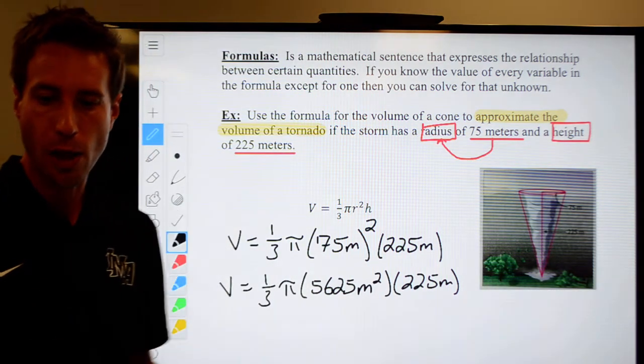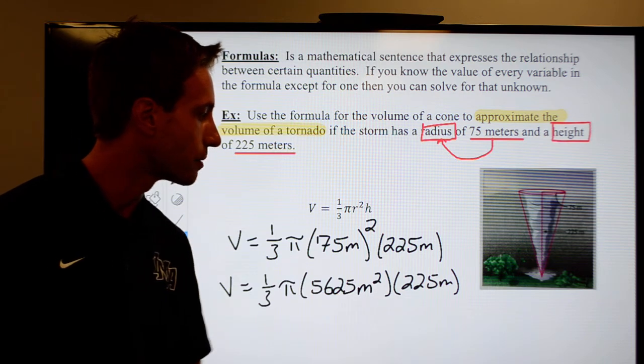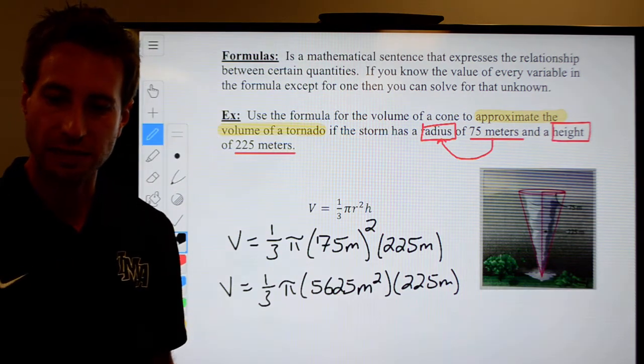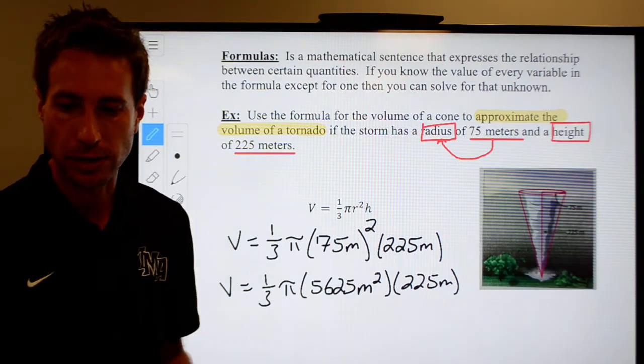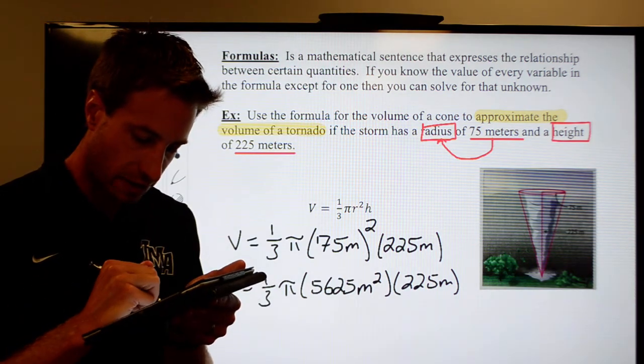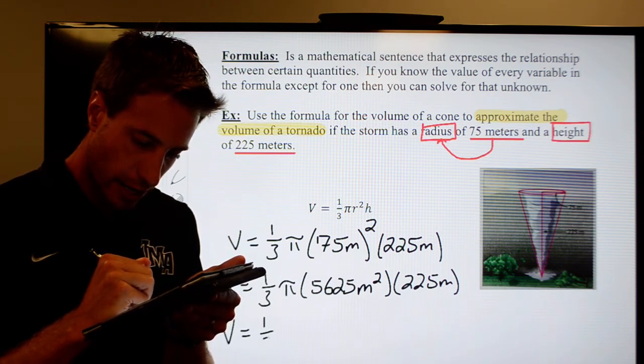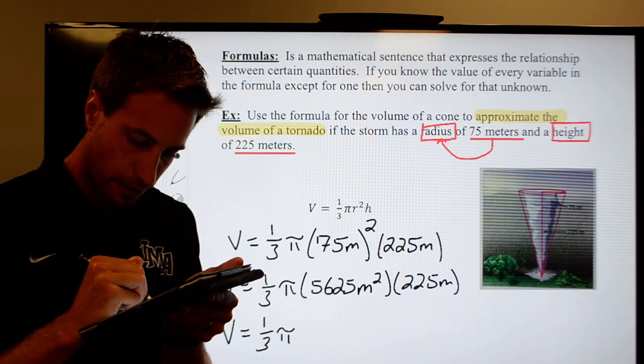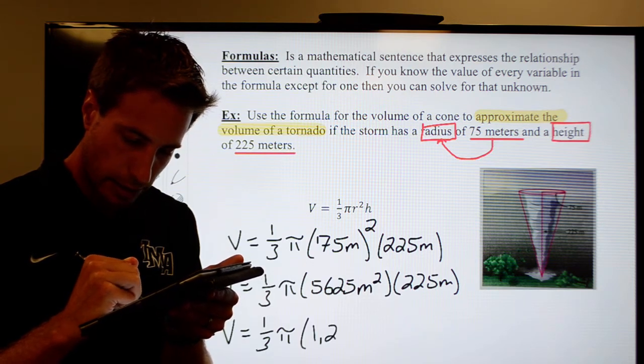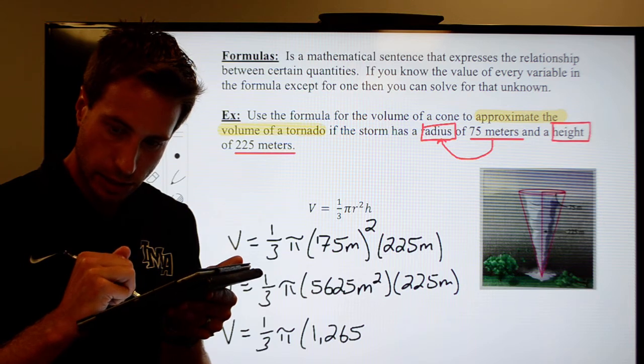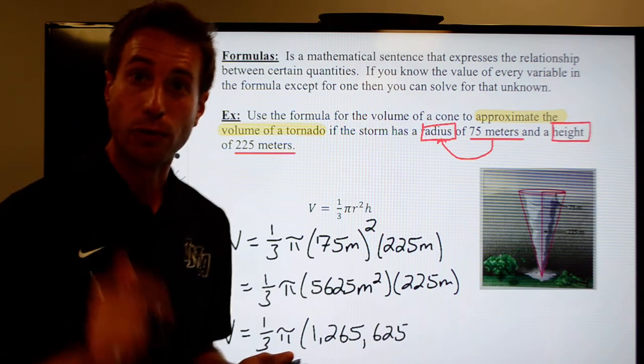But when I multiply 5,625 times 225, I get 1,265,625. Double check that on your calculator. Make sure I did it right.